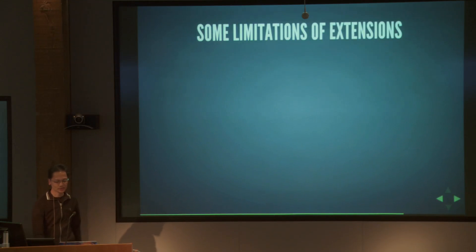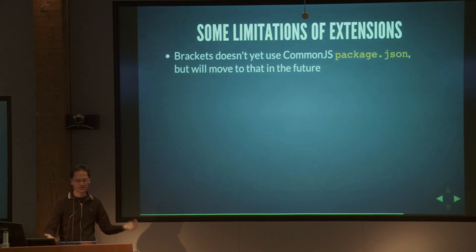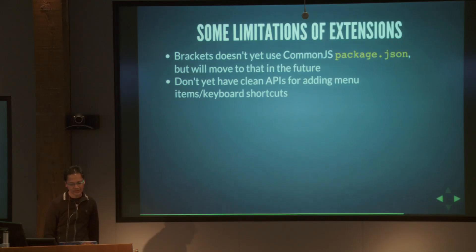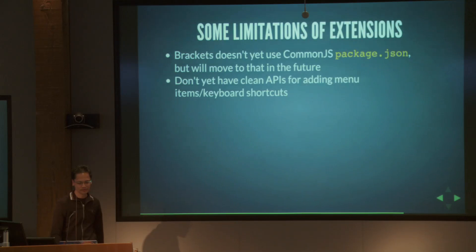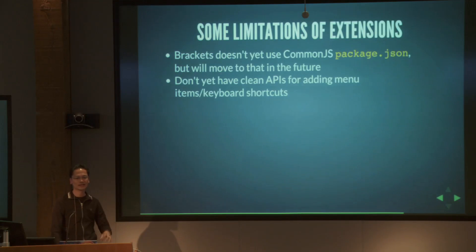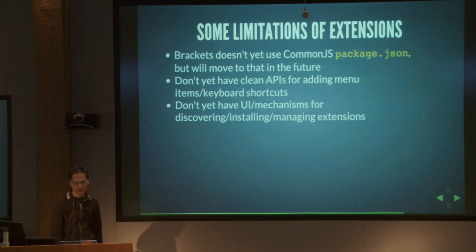It's very early days with this stuff and there are still some limitations. Right now the main module is hardcoded to main.js — we should be using something like package.json. We don't have clean APIs for adding menu items or keyboard shortcuts, which is something we're working on in this sprint. Right now if you want to put something in the menu, you have to hack it in by reaching into the DOM. We also don't have mechanisms for discovering or installing extensions yet.